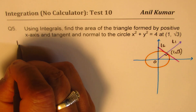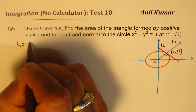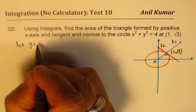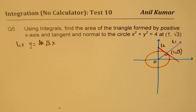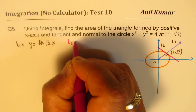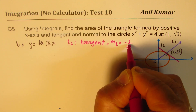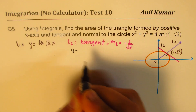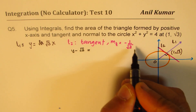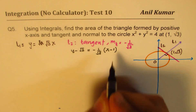The equation of line L1 will be a direct variation going from the origin to the point. We get y = √3·x as the equation of line 1. To find the equation of the tangent, which is line L2, the slope has to be the negative reciprocal. So the slope of the tangent is −1/√3. We write its equation as y − √3 = (−1/√3)(x − 1).